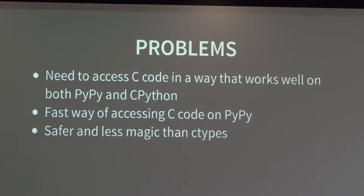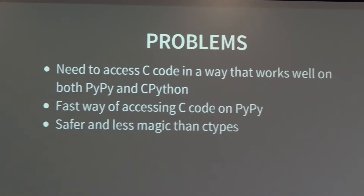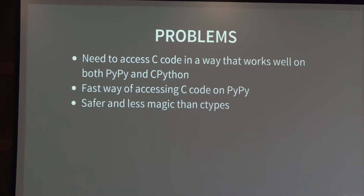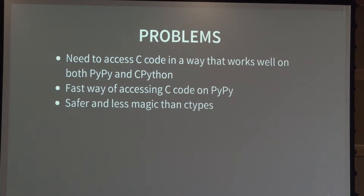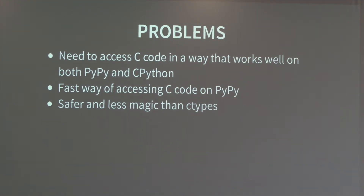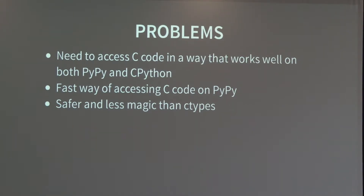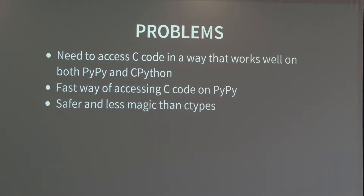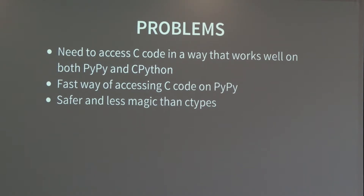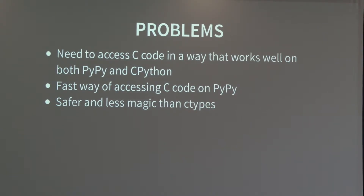It also needs to be fast on PyPy because people use PyPy mostly for performance reasons — if it's slow, there's no point in using PyPy and CFFI together. ctypes worked on PyPy, but there's lots of magic involved in it. It tried to guess types for you sometimes, and if it gets it wrong, it would just crash without any error message and just print segmentation fault. It's not really the Python experience.